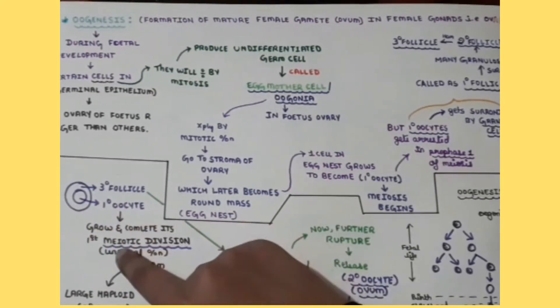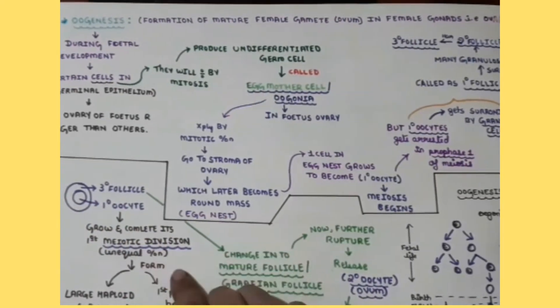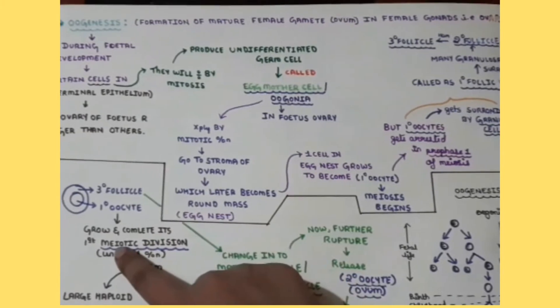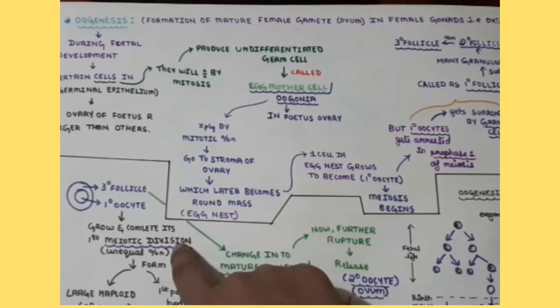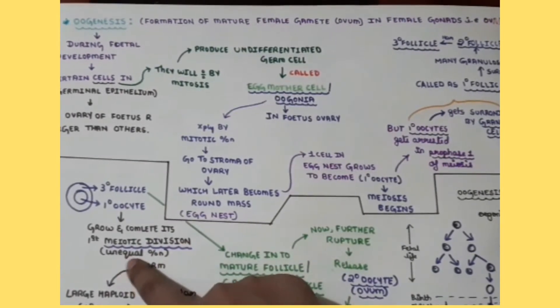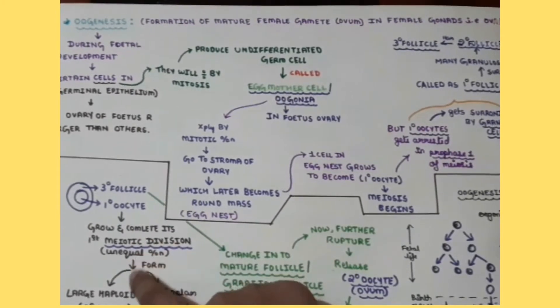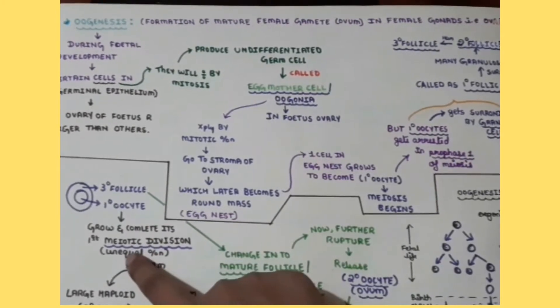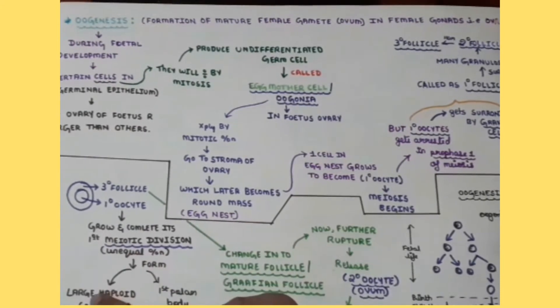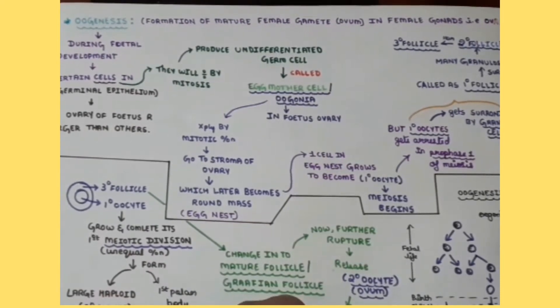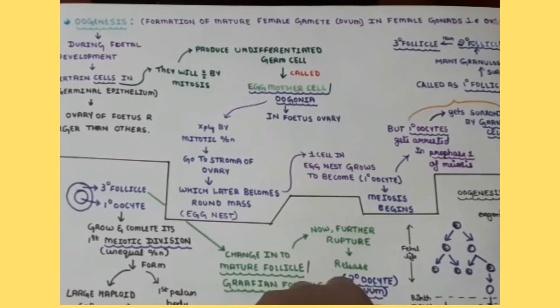So this primary oocyte will complete its meiotic division. Meiotic is nothing but unequal division, mitotic is equational division. So it will complete its meiotic division and it will form large haploid secondary oocyte and primary polar body.